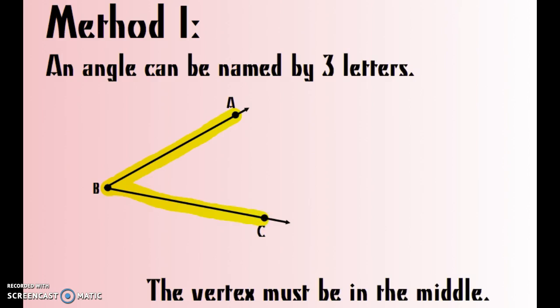And typically when I draw an angle symbol, you can either make a little L like that and call it A, B, C, or sometimes I draw a little arc like this, A, B, C.